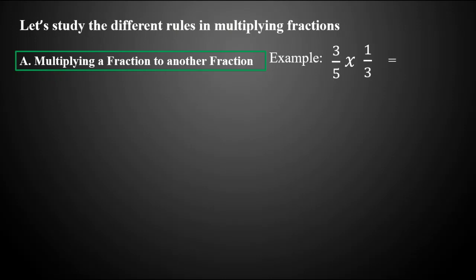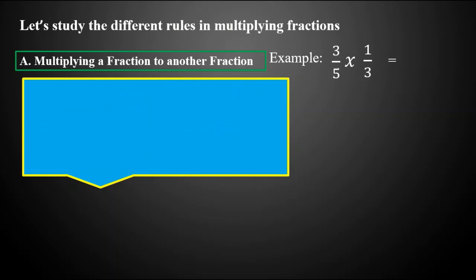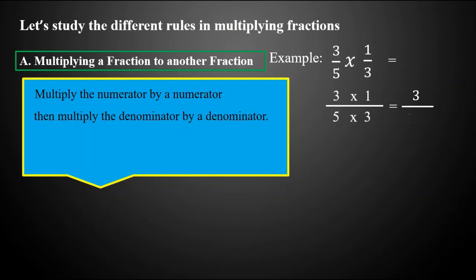Our given example is three-fifths times one-third. Here are the simple steps to find the product. First, we are going to multiply the numerator of our first fraction by the numerator of our second fraction, so that's three times one which is equal to three. Then we are going to multiply the denominator of our first fraction by the denominator of our second fraction, so that's five times three.